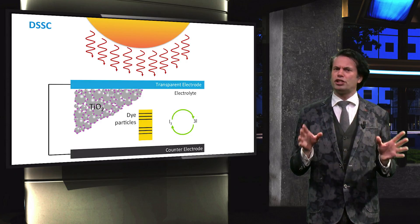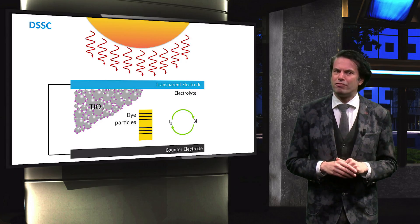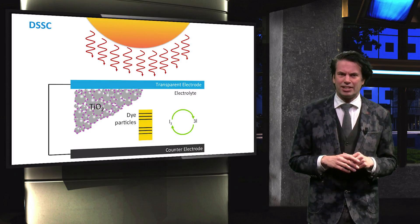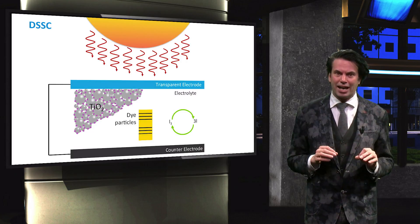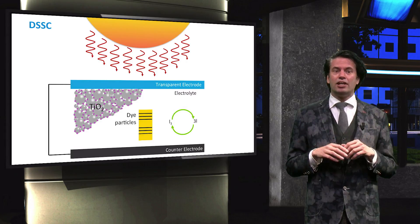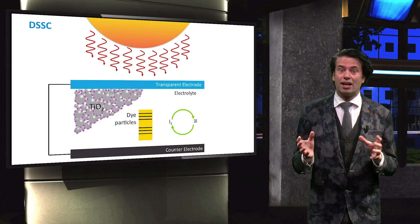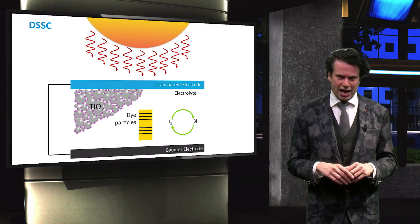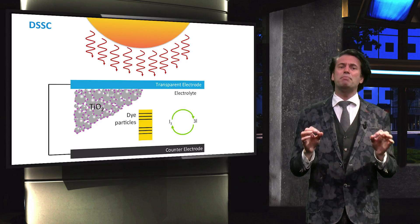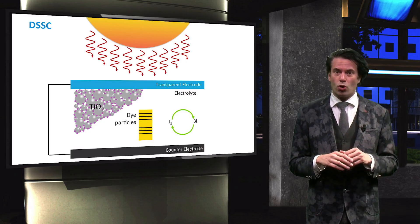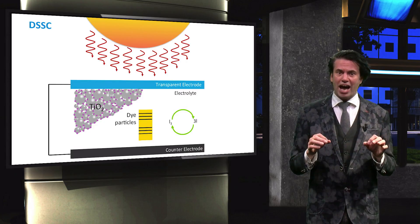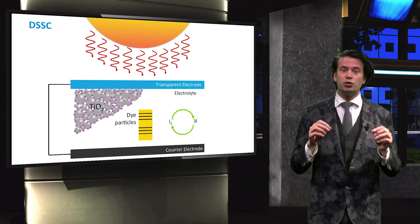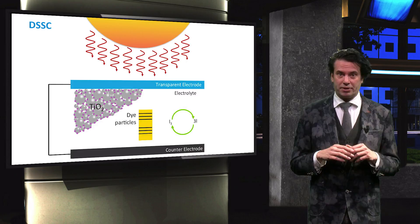Let's consider first the photoactive parts of the solar cell. These parts consist of the photoactive dye-sensitizer, which acts like an electron donor, and secondly the nanoparticles, which act like the electron acceptor. Similar to organic bulk material in a heterojunction solar cell, the dye material is mixed with titanium oxide particles. The photoactive material is the so-called dye-sensitizer, ruthenium polypyridine.